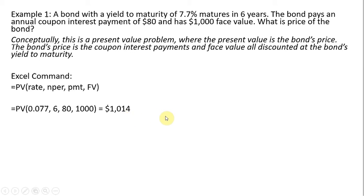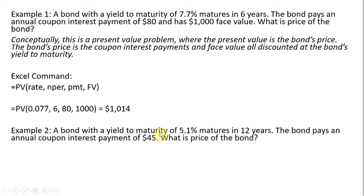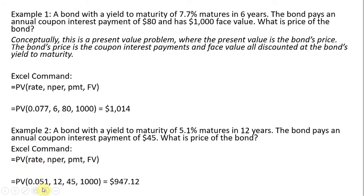Let's do another example. Example two: a bond with a yield to maturity of 5.1 percent matures in 12 years. The bond pays an annual coupon interest payment of $45. What is the price of the bond? Same formula — we'll just enter in different numbers, putting in the rate for the yield to maturity of 5.1 percent. 12 is the number of years to maturity. 45 is the coupon interest payment. And $1,000 once again is the face value, and we get a value of $947.12.